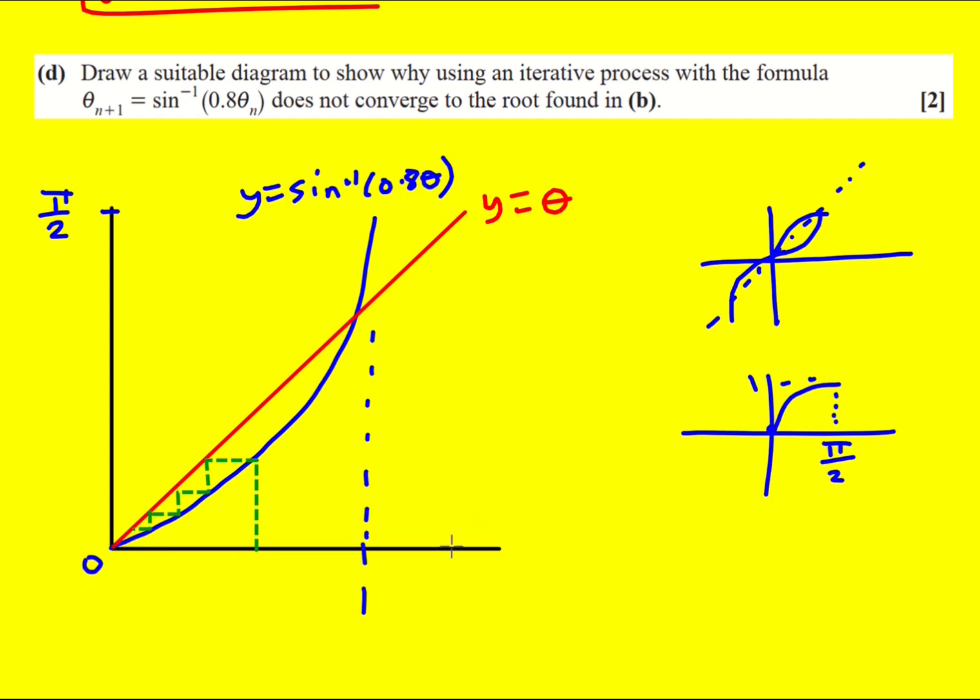If you happen to start beyond the root, then you'd go all the way up to it. And it would, I'm kind of running out of space here. So let's imagine we start just beyond here. Then you're going to hit that, and then it's going to go up. And then it's going to, then you are going to get staircase divergence. So you can mention that word if you want.